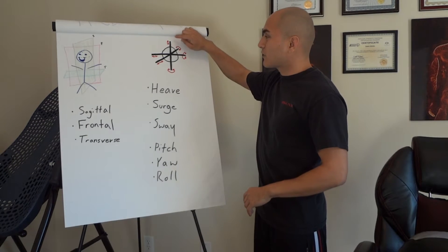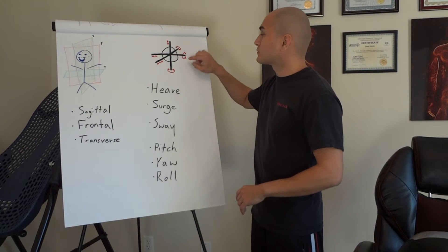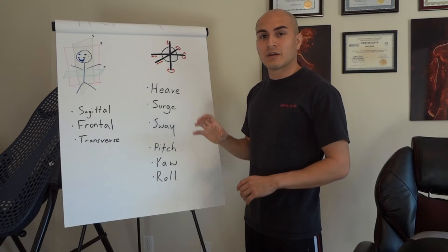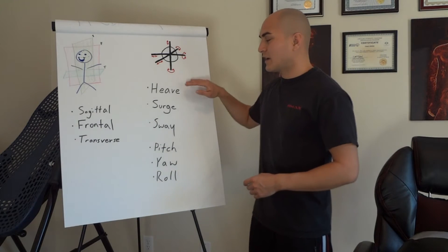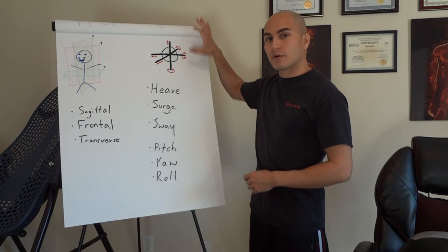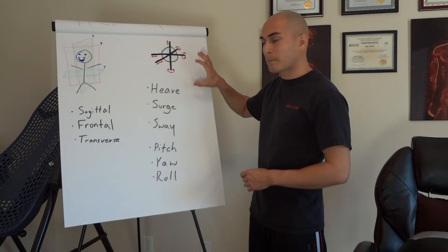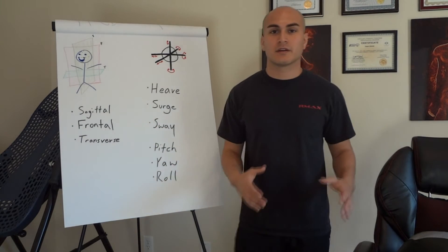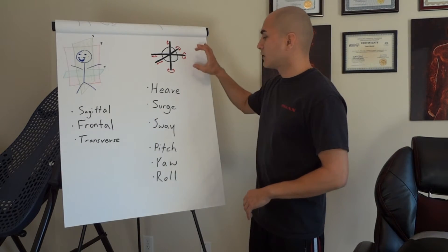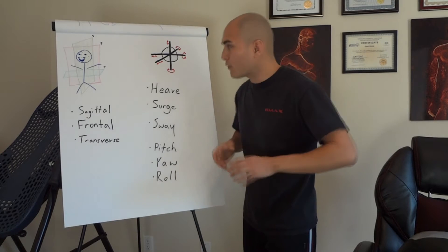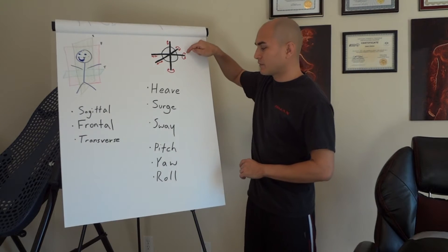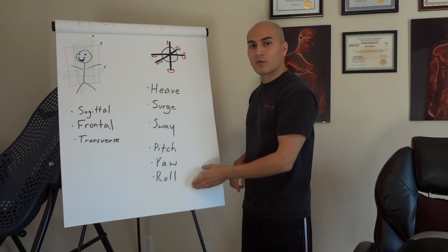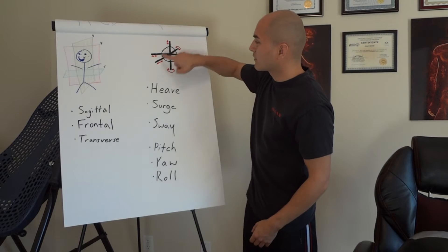The Six Degrees of Freedom shows that there are three axes, and there is a degree of translation and a degree of rotation for each of those axes. So here we see heaving, which is vertical movement along this axis; surging, forward and back; and swaying, side to side. Then you have pitch, which is forward rolling around this axis; yaw, rolling around this one; and roll, which is rolling around this one here.